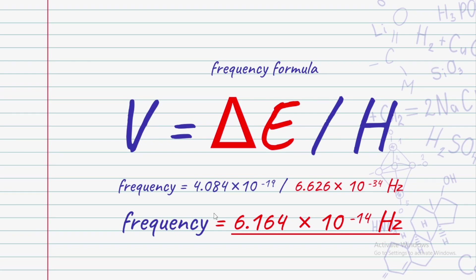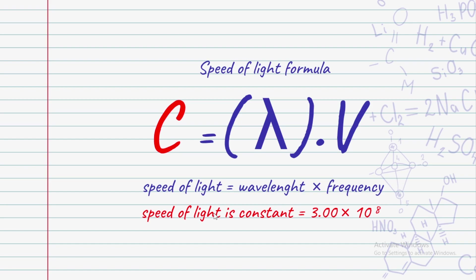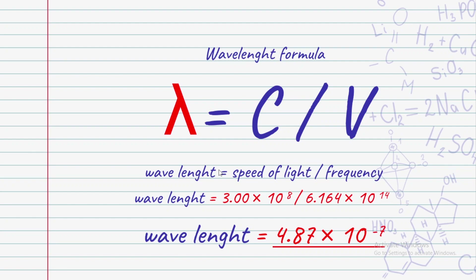Frequency is found. Now for wavelength, we use another formula. Wavelength and frequency are related by the speed of light formula: speed of light equals wavelength times frequency. Rearranging, wavelength equals speed of light over frequency.